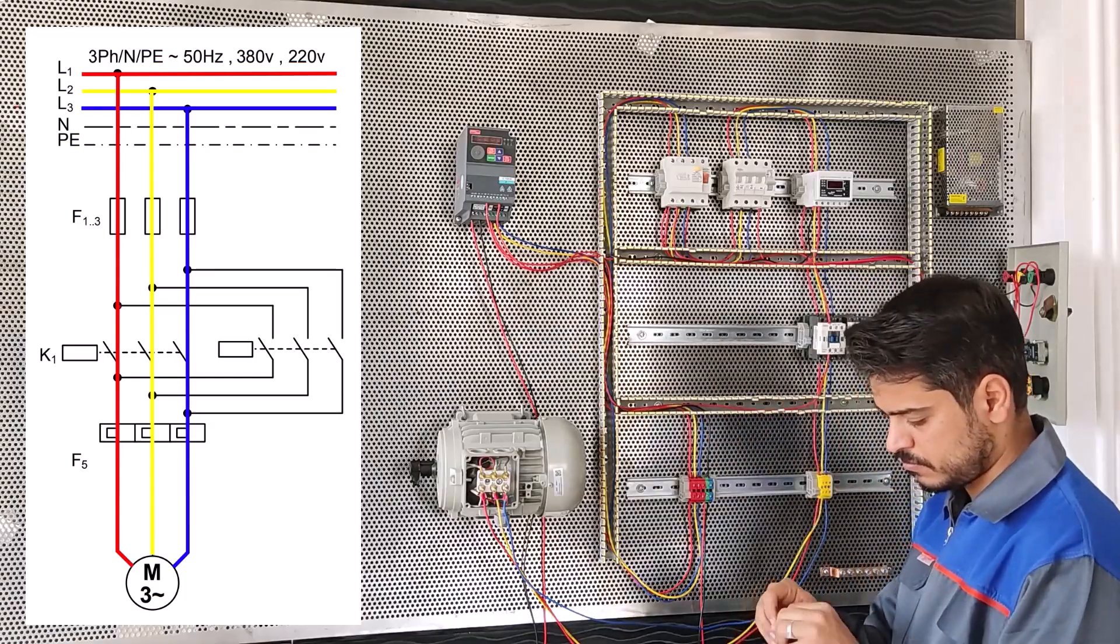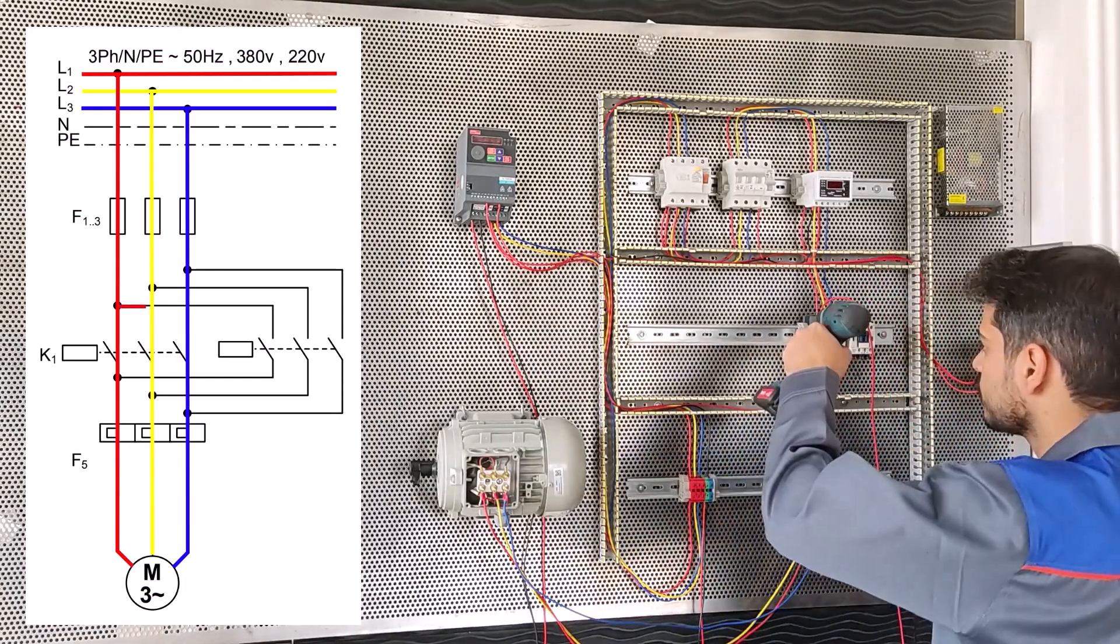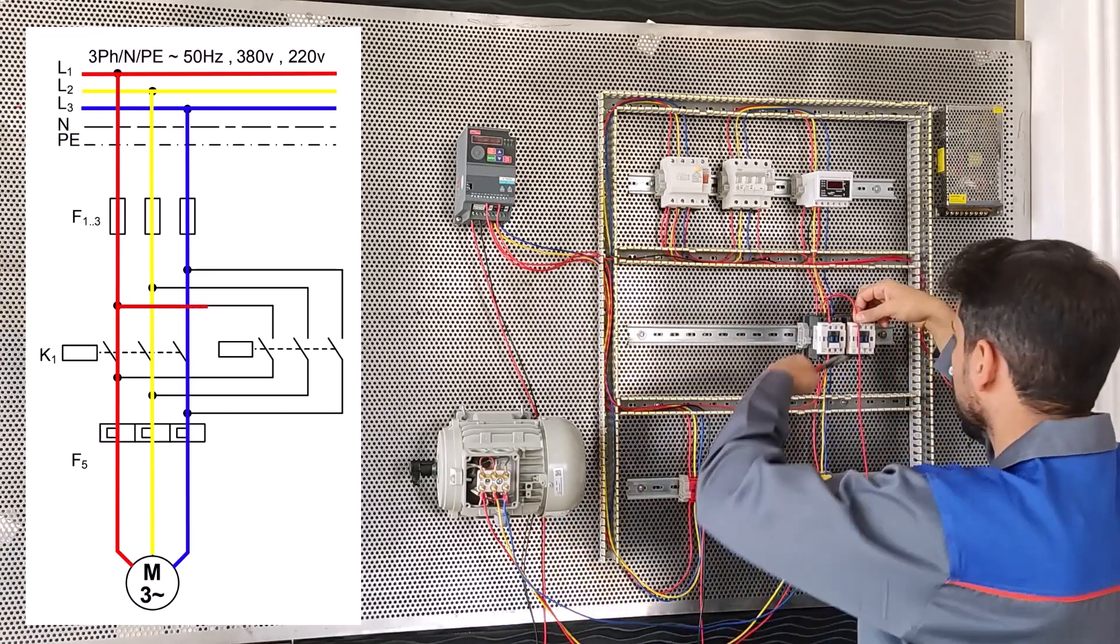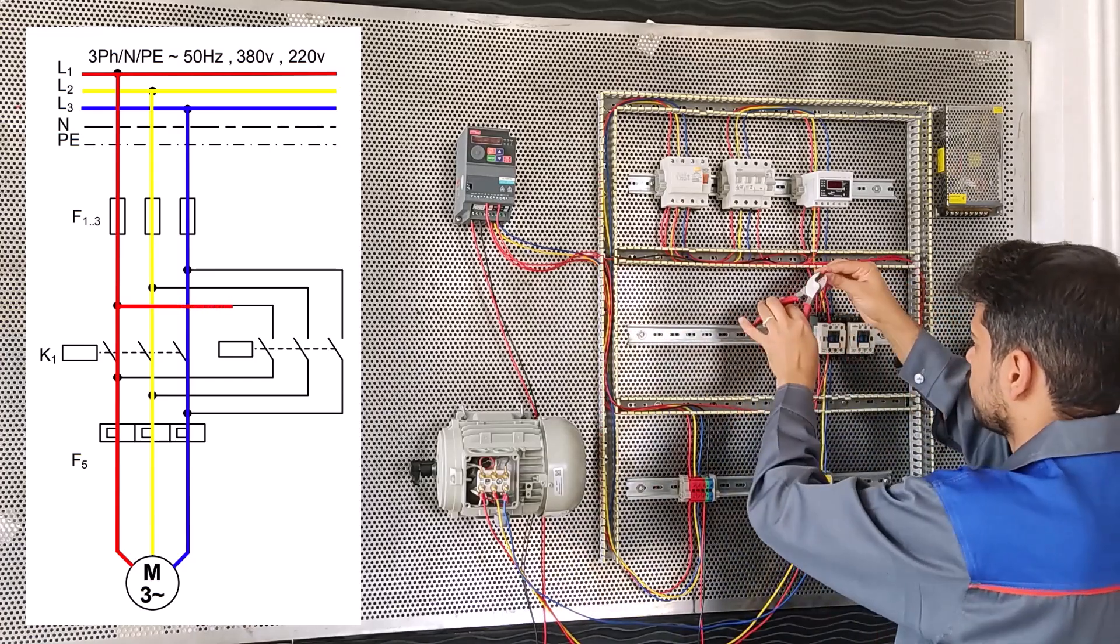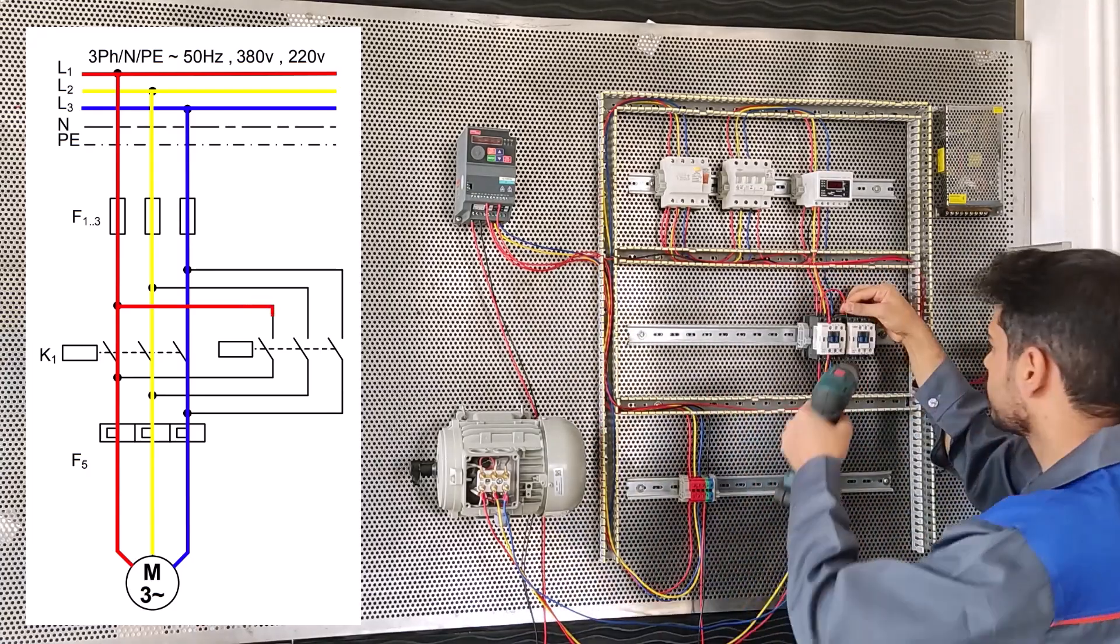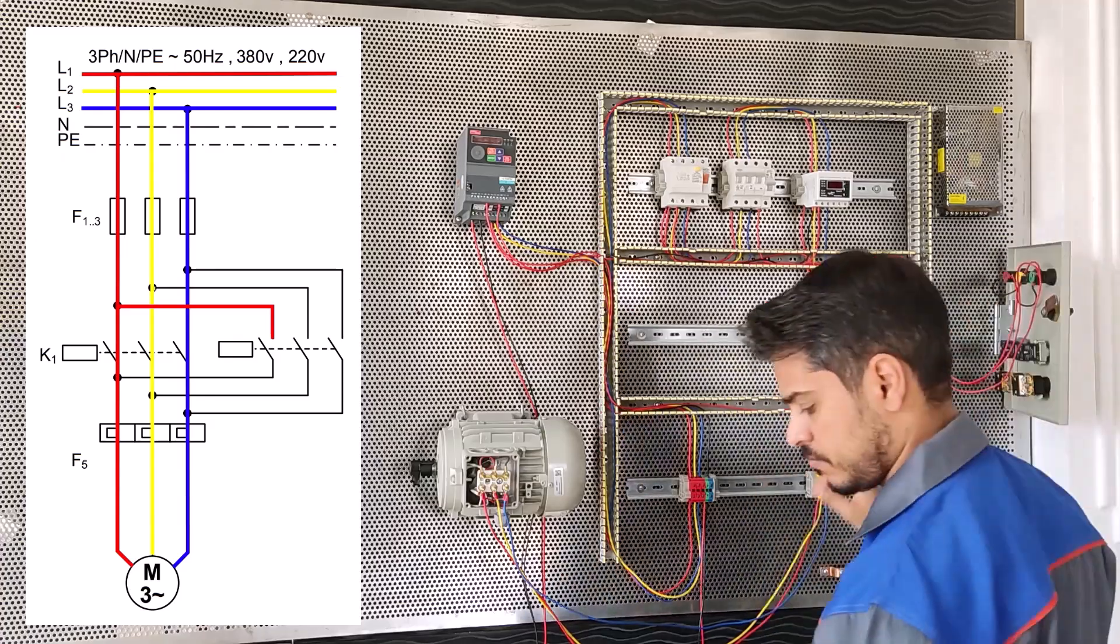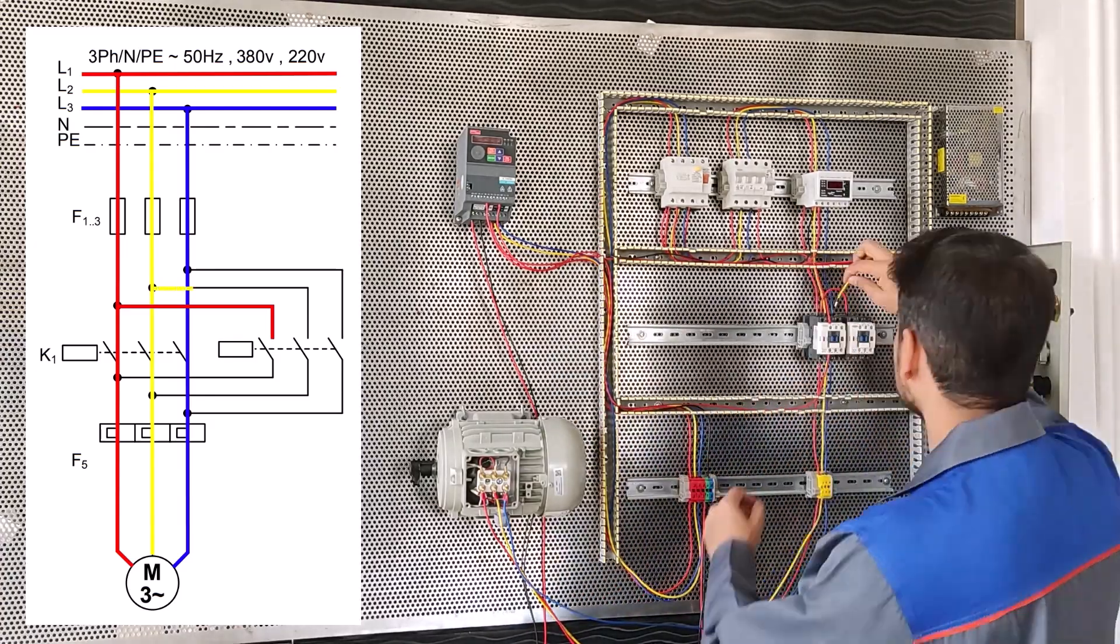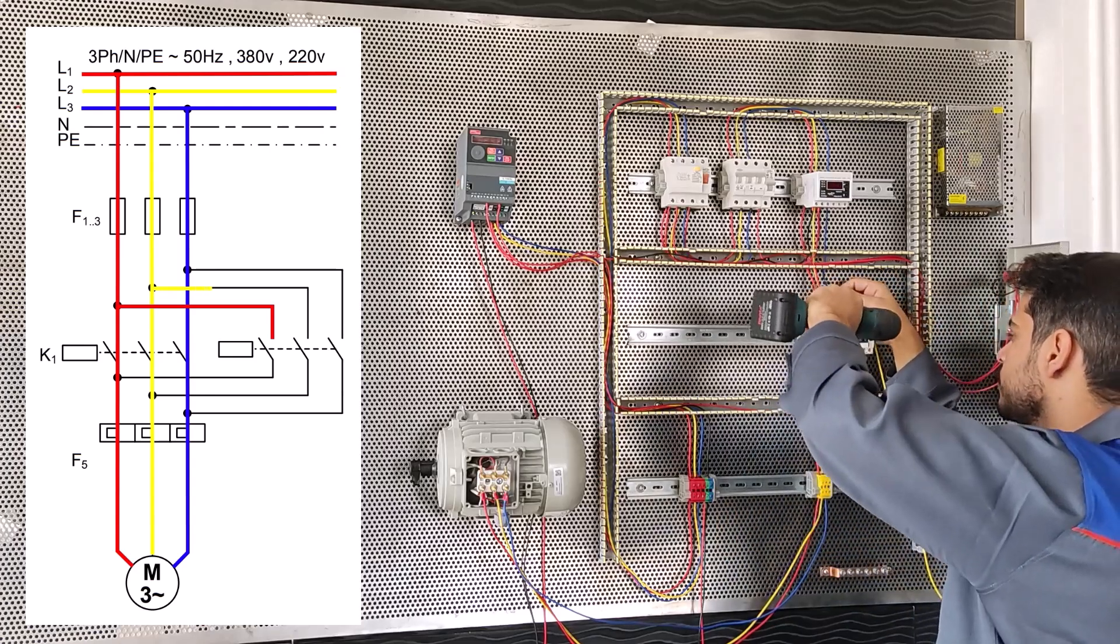This is similar to the direct power circuit but a conductor is added. L1, L2, and L3 are connected directly. One of the conductors works momentarily and the other permanently.